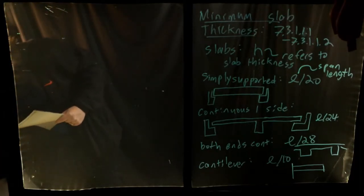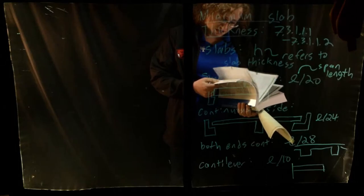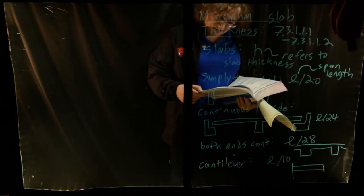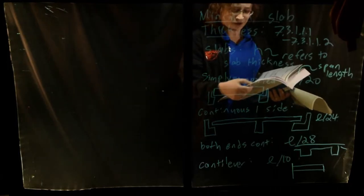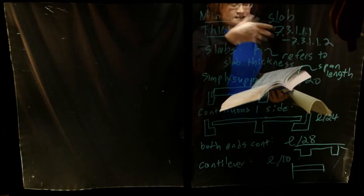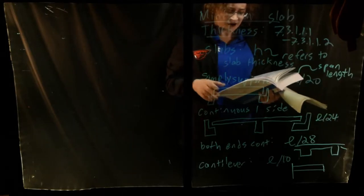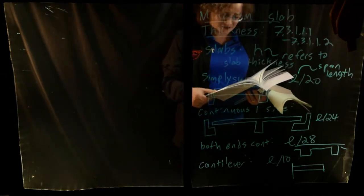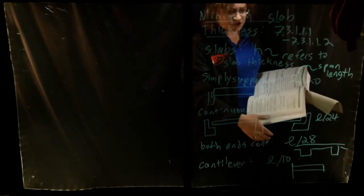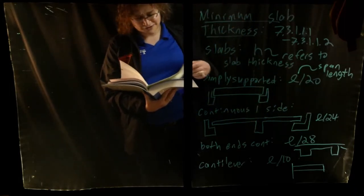One other thing to mention: looking at section 7.3.1.1.1 in the ACI — not just the table but the language below it — there's a statement that says for Fy other than 60,000 PSI, the expressions in the table shall be multiplied by (0.4 + Fy / 100,000). This is basically saying these provisions assume 60 KSI steel. If you're using a different steel, you need to apply this multiplier to adjust the table values.